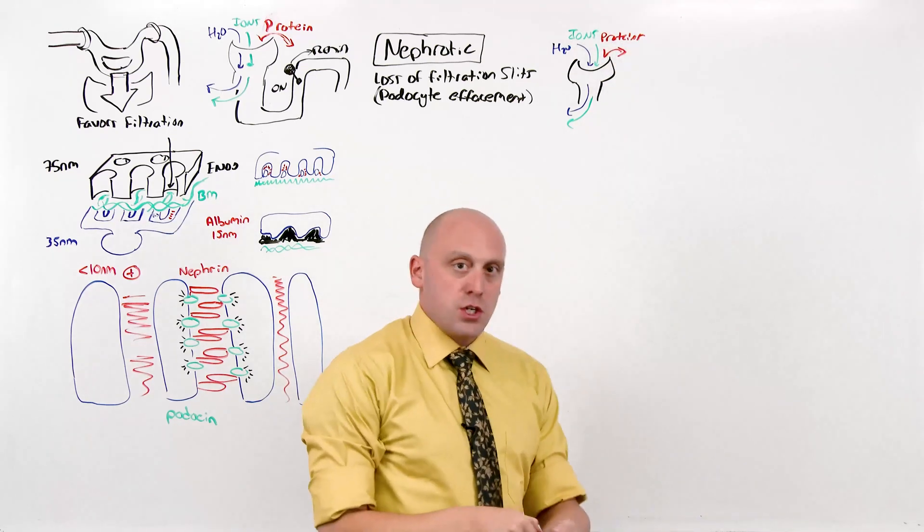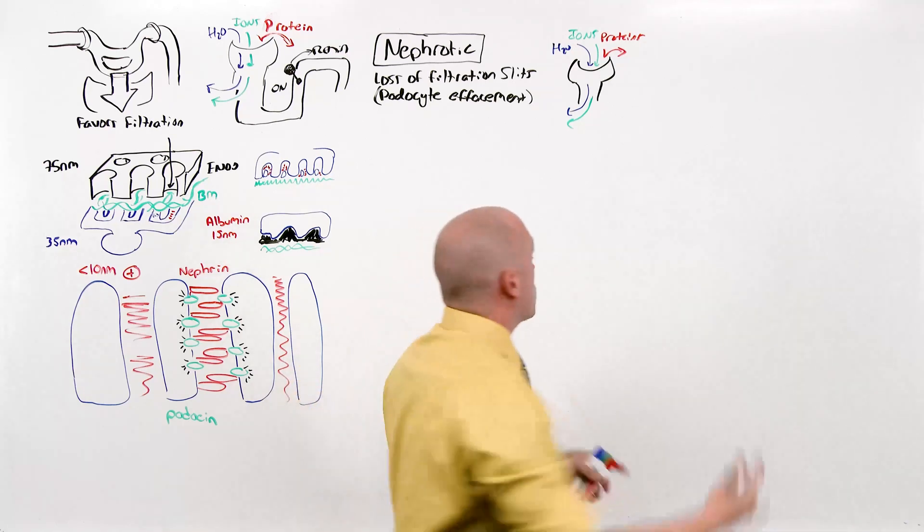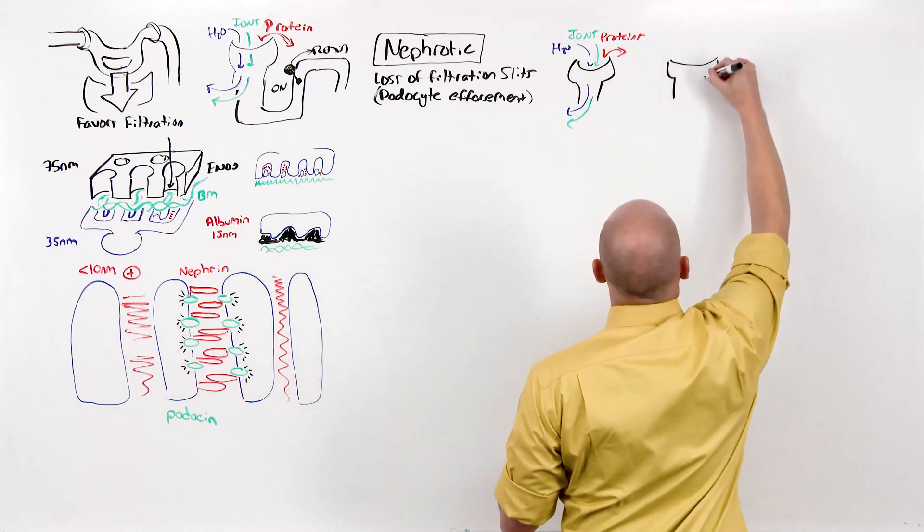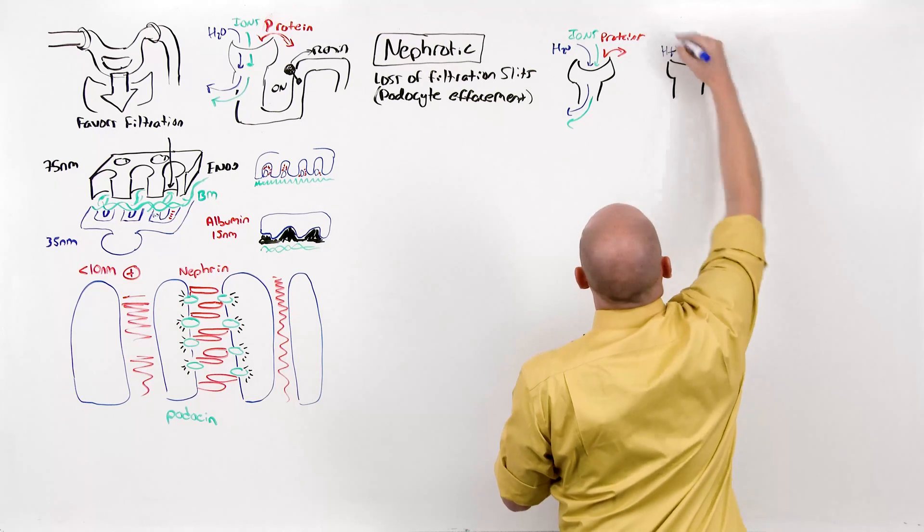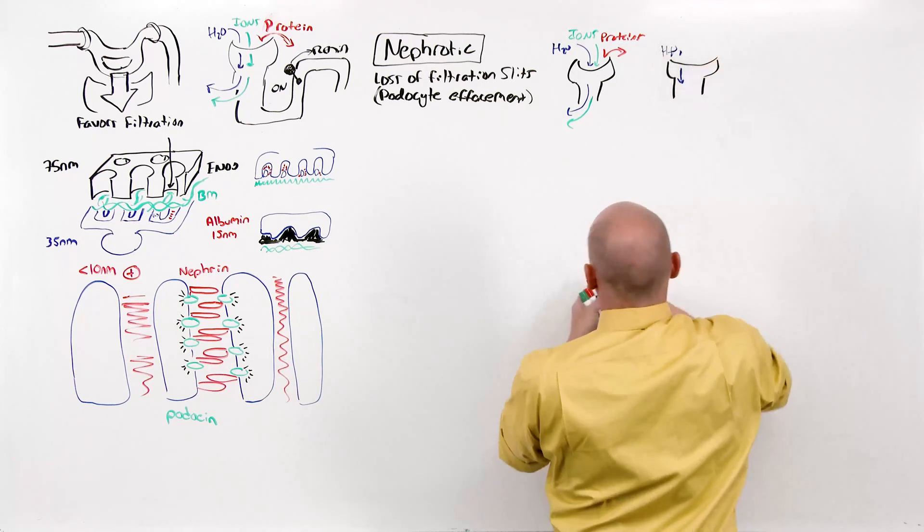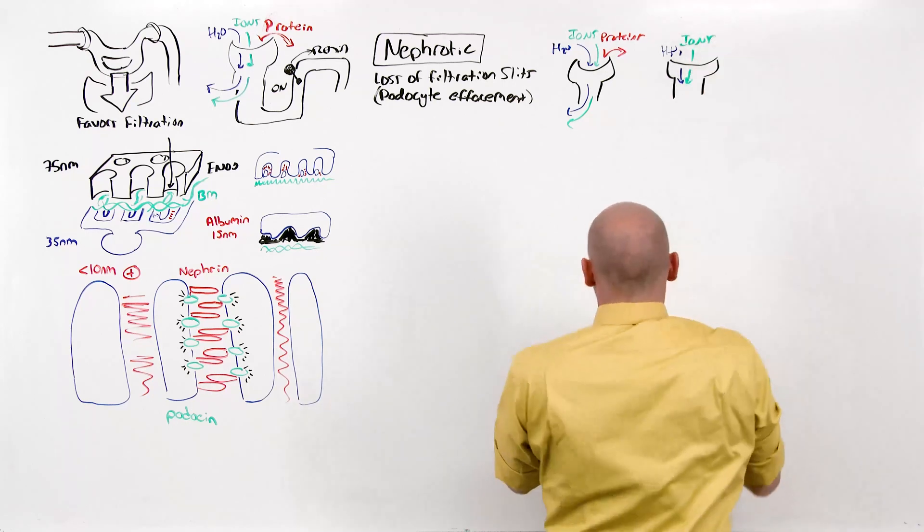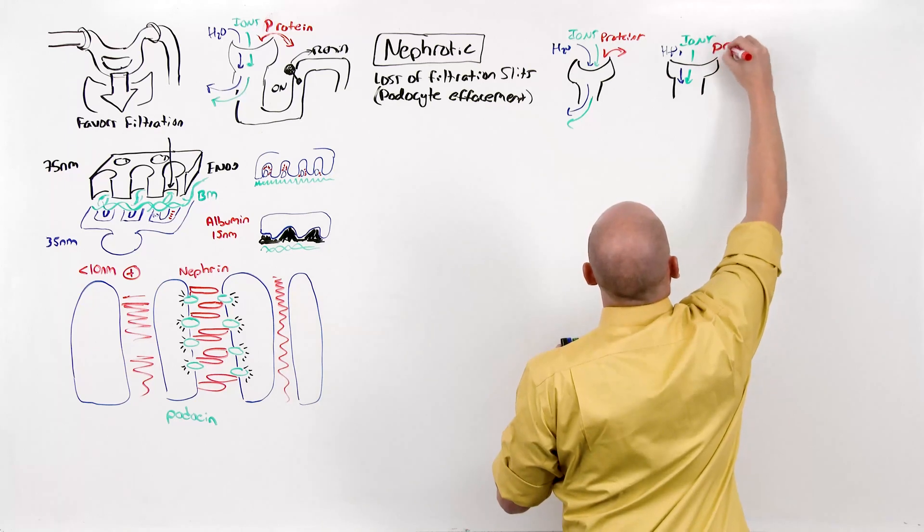Proteins are restricted by the filtration slits. If you lose the filtration slit, and that's all that happens, consider what's going to happen here at the glomerulus. Water is going to be filtered. Ions are going to be filtered. They always are. Then the thing that was previously restricted is now unrestricted.